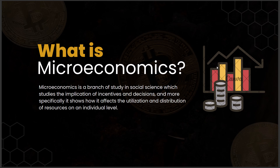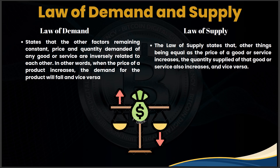Microeconomics also deals with prices and production in one single market — be it Bangalore, Delhi, Calcutta, or Chennai — and the interaction between different markets, like Delhi and Calcutta, Bangalore and Delhi, Chennai and Bangalore. That is what microeconomics does. Now let us look at the law of demand and law of supply.